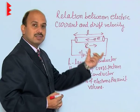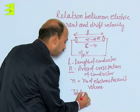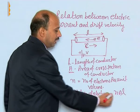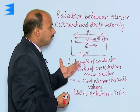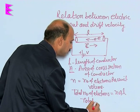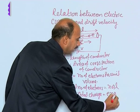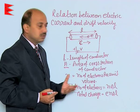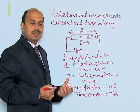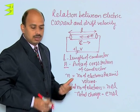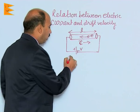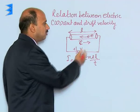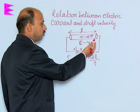Let us calculate the total number of electrons in this conductor. Total number of electrons is equal to n times A times L — that is, the number of electrons per unit volume multiplied by the volume of the conductor. So the total charge Q is equal to e times n times A times L, where e is the magnitude of the charge on an electron. Let the time taken by the charge to pass through the conductor be T. So I is equal to Q upon T, which gives eNAL upon T.